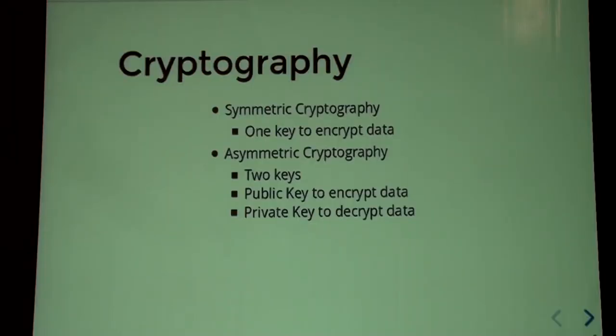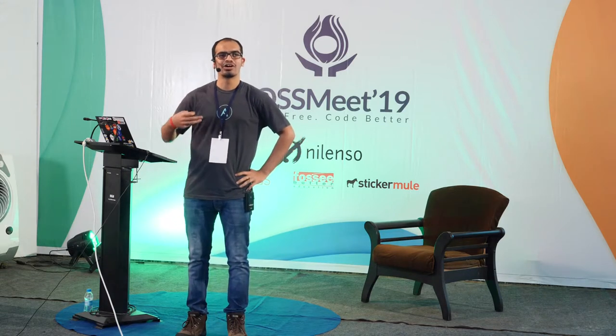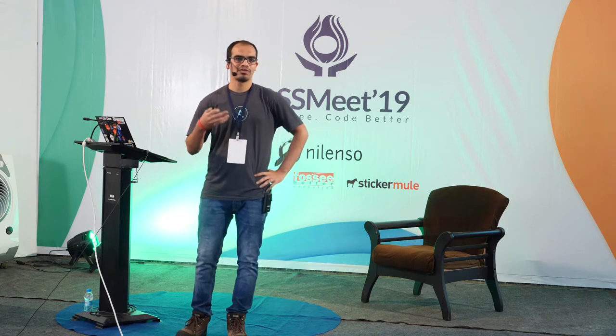Now one of the most interesting topics: cryptography. How many of you know about the two types of cryptography? Everyone should know this, because from ancient times we have been using it. Even in World War times, people used random text to communicate so enemies couldn't understand. There are two types: asymmetric cryptography and symmetric cryptography.